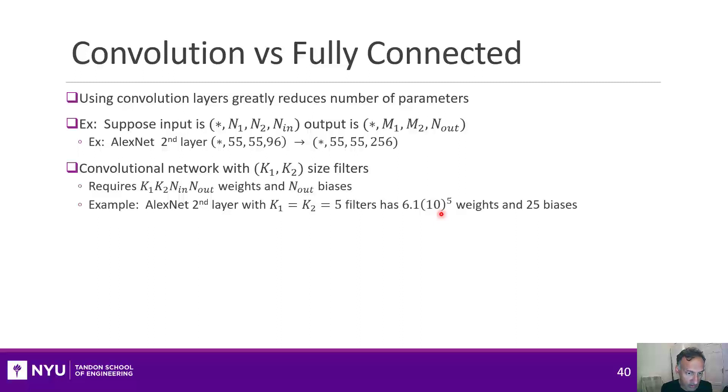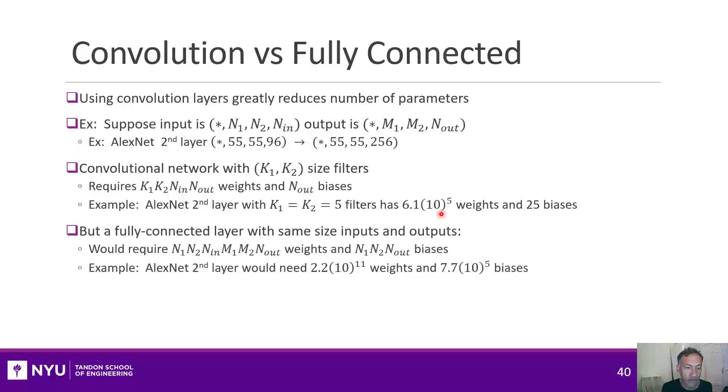All right, that sounds like a lot. But let's consider how many weights you would need for a fully connected layer. For a fully connected layer, for every possible input and every possible output, you would have a weight. So you would get the product of all six of these. And that number would be something like 10 to the 11, or 2 times 10 to the 11 weights. So it's orders of magnitude more.